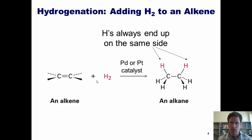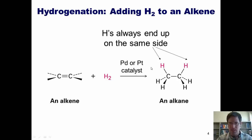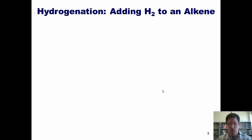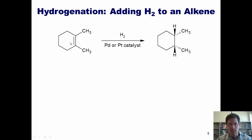Here's a reaction you've seen many times. If we take an alkene and treat it with hydrogen gas and a palladium or platinum catalyst, it will hydrogenate, reducing it all the way to an alkane. The hydrogens always end up on the same side—they are cis or syn to each other. These reactions can also be done with rhodium catalysts; a special catalyst of that type is called Wilkinson's catalyst, which appears frequently on standardized exams. In a cyclohexene treated with hydrogen gas and palladium or platinum catalyst, both hydrogens get added to the same side, giving a cis compound.